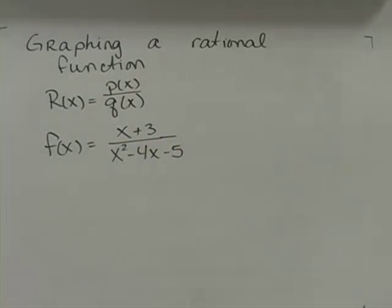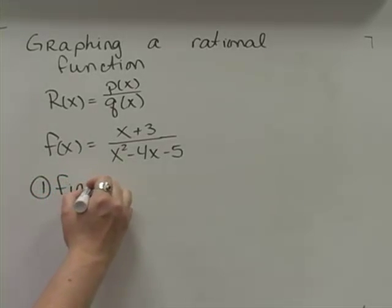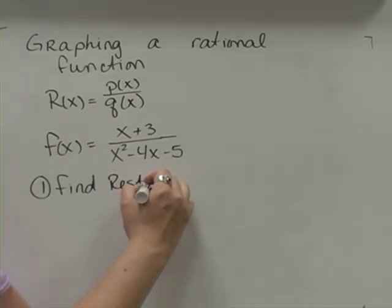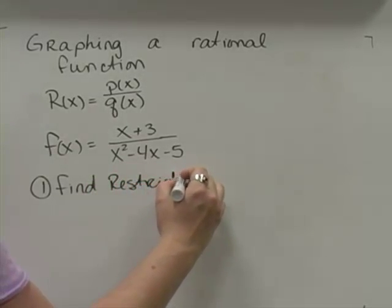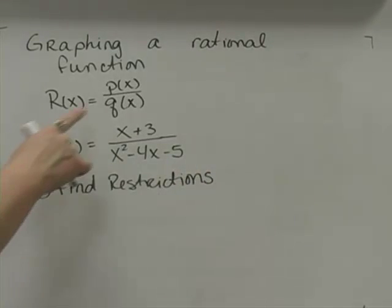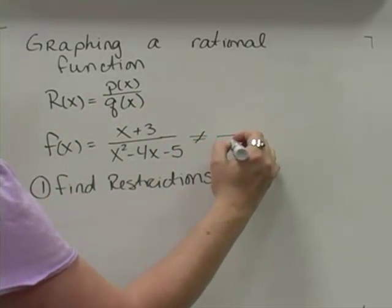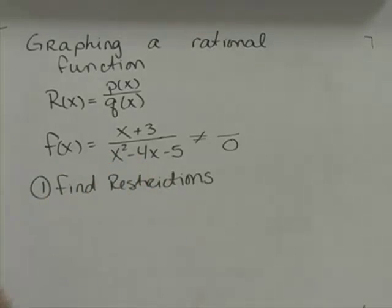The first thing we want to do when we're graphing our rational function is we want to find our restrictions. From our restrictions, we'll build our domain. The restrictions come from the q of x because I want to make sure that the function on the denominator, q of x, does not equal 0. If q of x equals 0, then we'll have an undefined function. So the first thing I've got to do is figure out what x cannot be.